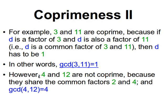However, four and twelve are not co-prime. The factors of four are one, two, and four. The factors of twelve include one, two, three, four, and six. So four and twelve share factors two and four. The greatest common divisor of four and twelve is four, not one — so four and twelve are not co-prime. Whereas three and eleven are co-prime because their GCD is one. I hope this makes sense. Thanks very much for watching and I'll see you next time.